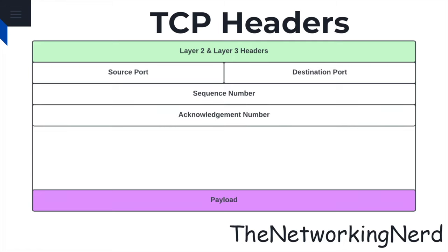The acknowledgement number indicates the next expected byte that the receiver of the TCP segment is anticipating, and it acknowledges the receipt of previous data and helps maintain reliable data transmission. The header length specifies the length of the TCP header in 32-bit words and determines the starting point of the data within the TCP segment.